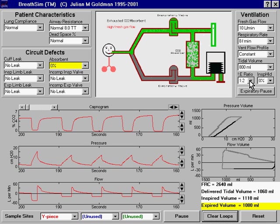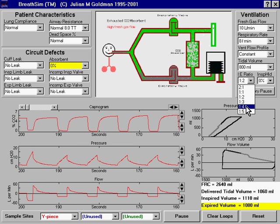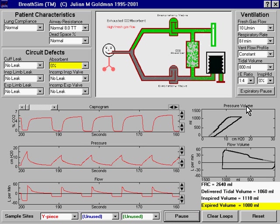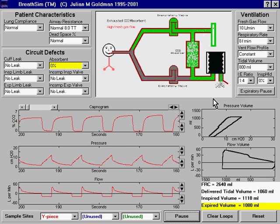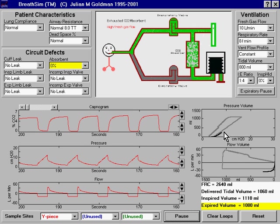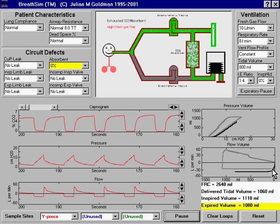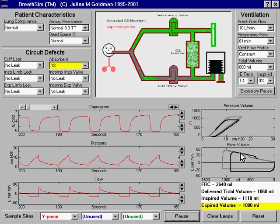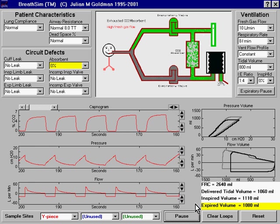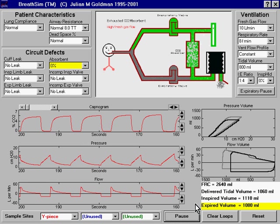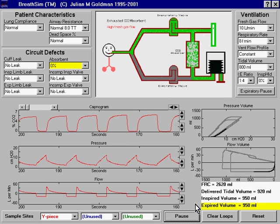So, for example, if we reduce the inspiratory time by changing the I to E ratio from 1 to 2 to 1 to 4, we would decrease the tidal volume. And we'll see that effect on the next breath. It's apparent in the flow volume loop, which is now smaller than the previous flow volume loop. And the expired tidal volume is changing from 1080 milliliters to 950 milliliters.